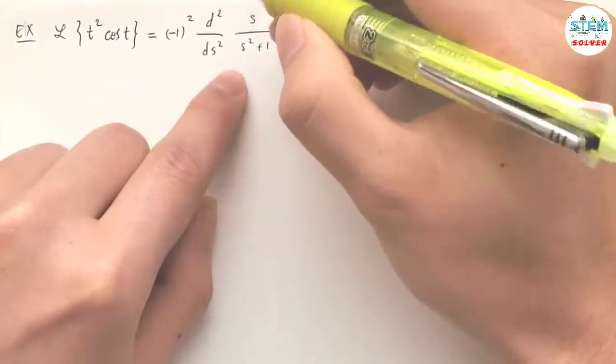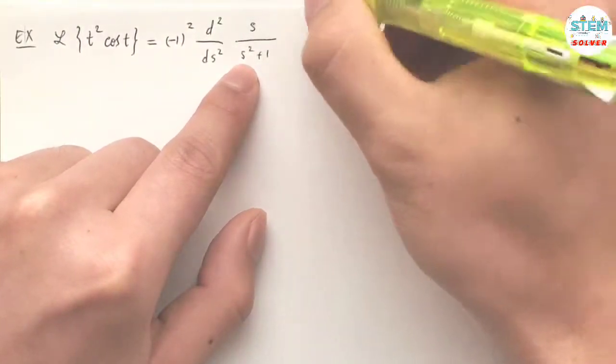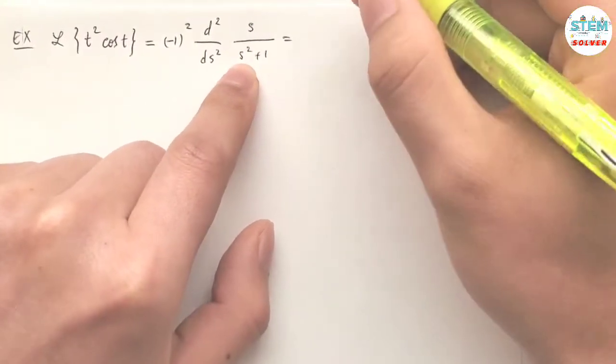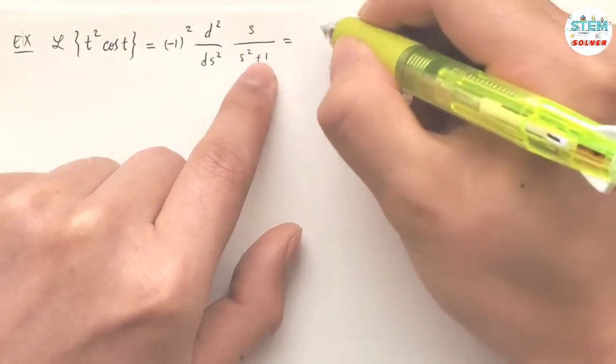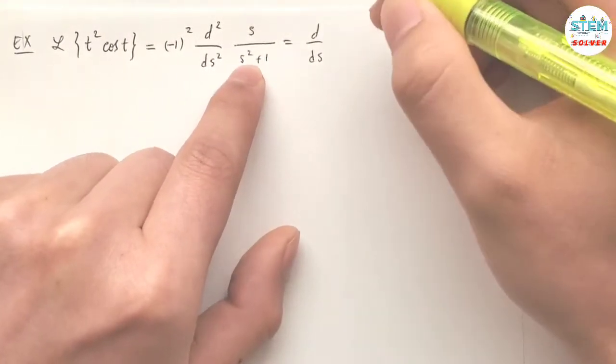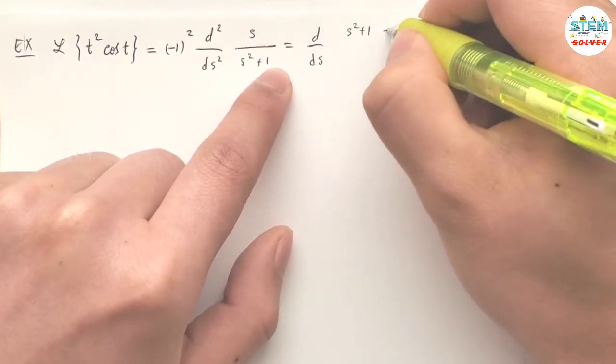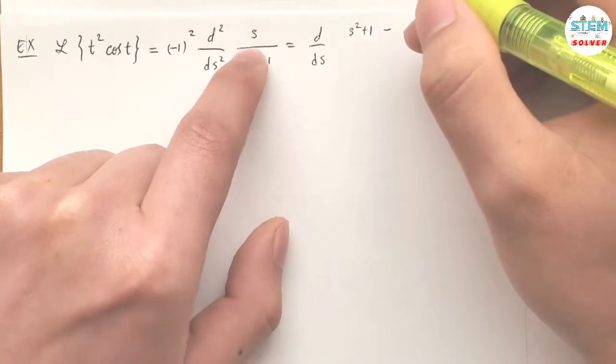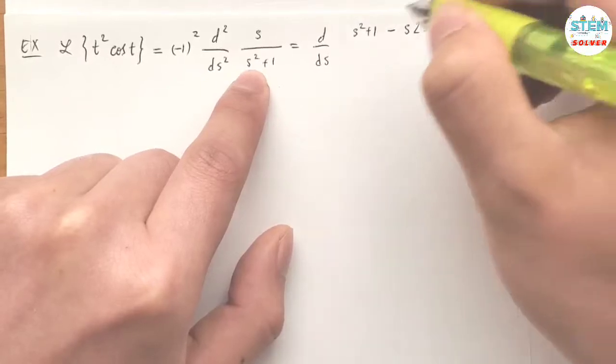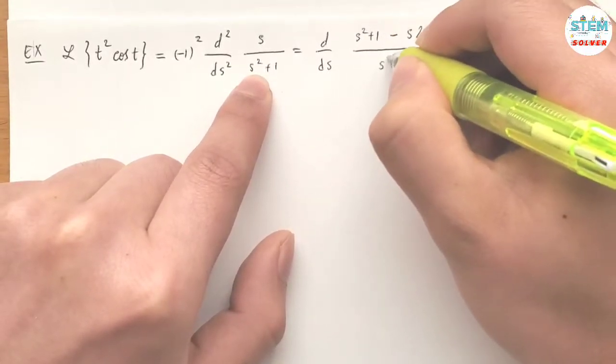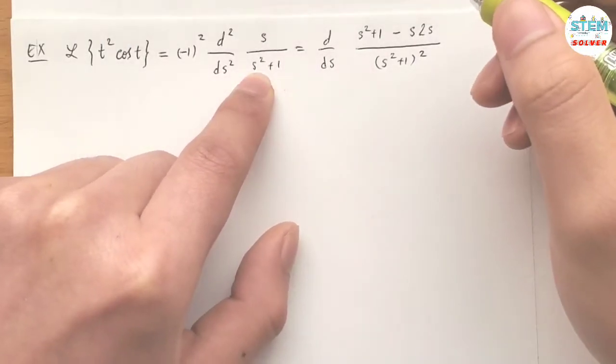Now take the derivative of this twice. I have (-1)² which is positive 1, so just ignore it. Take the first derivative of this: bottom times the derivative on the top minus the top times the derivative on the bottom, which is 2s, all over the bottom squared. That's the quotient rule.